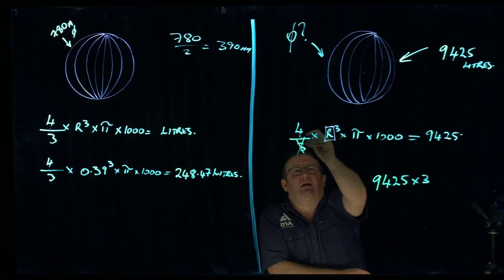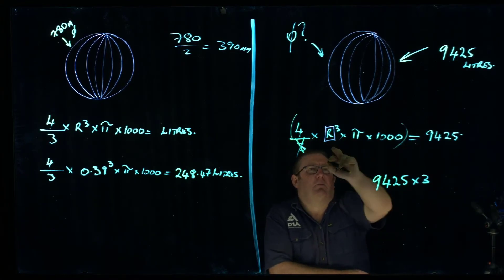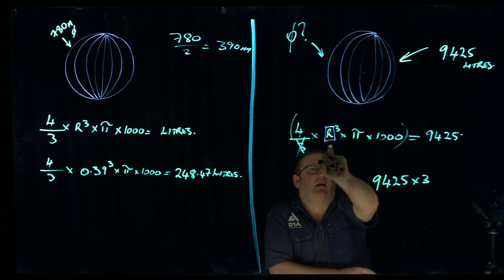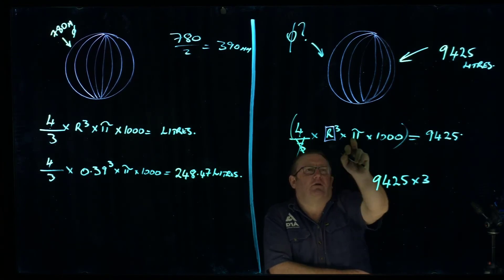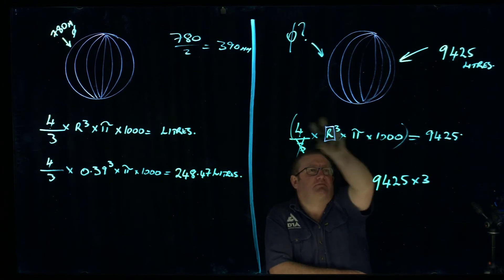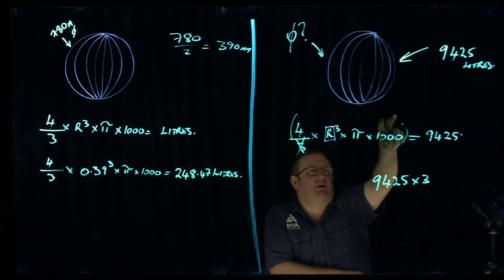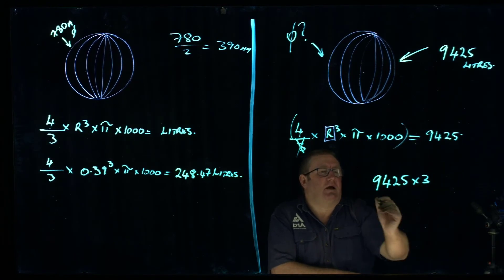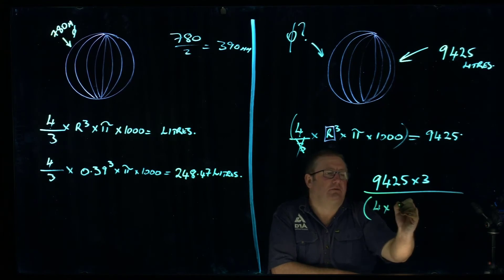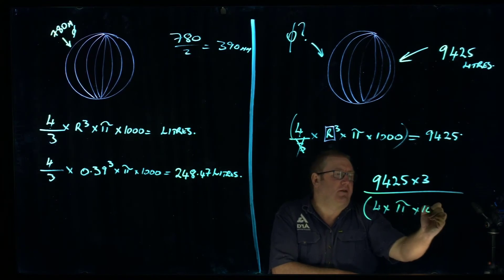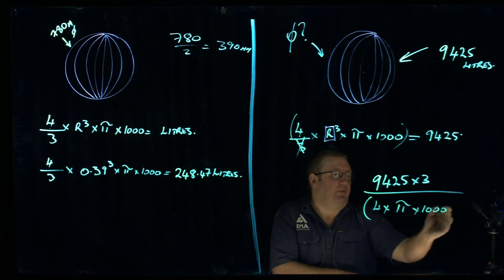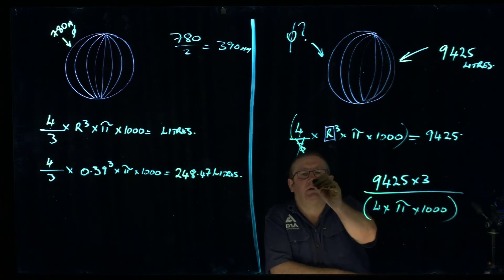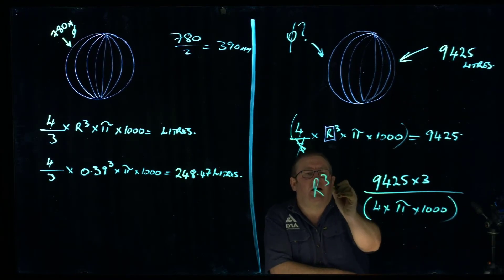Then if I put brackets around this portion, and I'm going to take out the R cubed. So what I'll do is the 4 times the pi times the 1,000 is multiplying all on this side. I want to take that as a group where it's multiplying and shift it to the other side. It becomes a divider. So it becomes 4 times pi times 1,000. Close the bracket. So at this point, we have R3 equals.